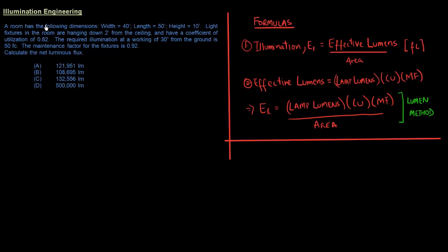Let's get into the problem first, as that's what's important for getting your marks in the exam. A room has the following dimensions: a width of 40 feet and a length of 50 feet, with a height of 10 feet. There are light fixtures hanging two feet from the ceiling with a coefficient of utilization of 0.82. The required illumination at the working level of 30 inches from the ground is 50 foot candles.